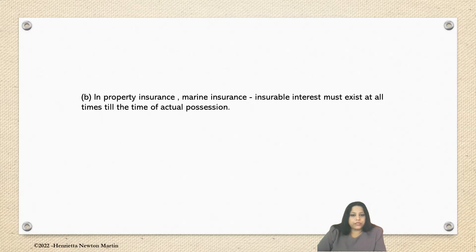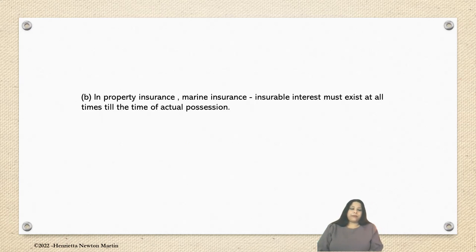In property insurance and marine insurance, insurable interest must exist at all times till the time of actual possession. Insurable interest may be passed on from one owner to another, because there can be a devolution of property, or a sale or purchase of property. In property insurance and marine insurance, what matters is the actual possession — who was in actual possession — and the interest that might shift from one person to another. Therefore, insurable interest may exist at all times in the subject matter — the property — till the time of actual possession.